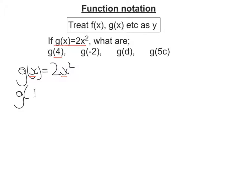So I'm going to get g(4) equals 2 times 4 squared. Now BODMAS tells me that I do the squaring before the multiplying. So it's 2 times 16. So g(4) is 32.